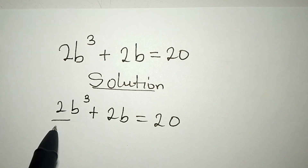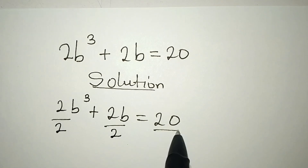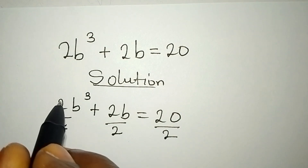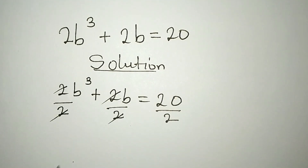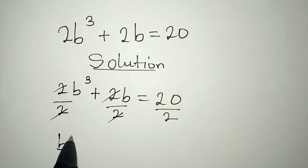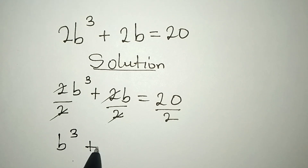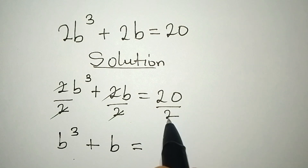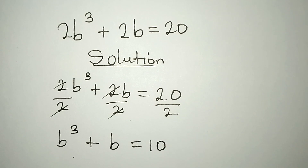We divide this by 2 — divide by 2, divide this by 2 — so that the 2s cancel. We'll now have b to the power of 3 plus b, and this is equal to 20 divided by 2, which is 10.